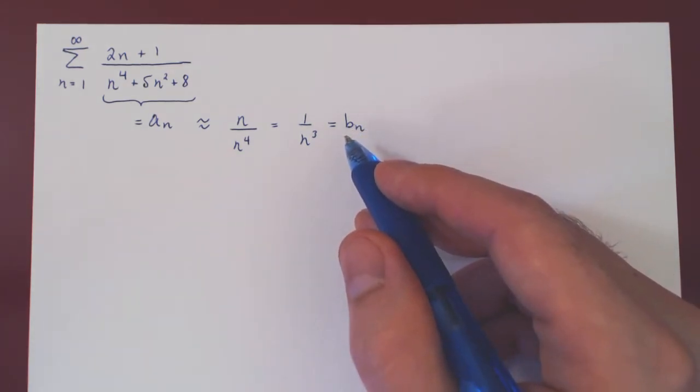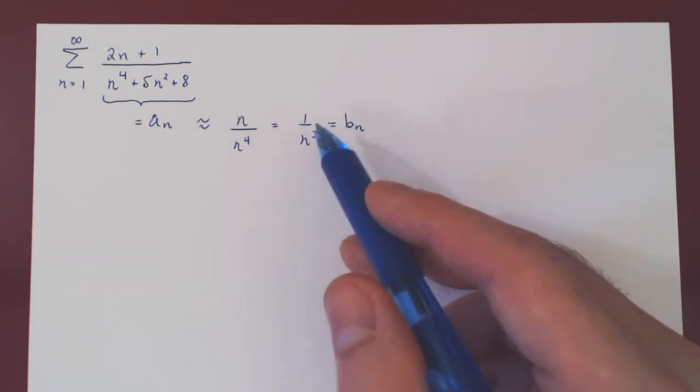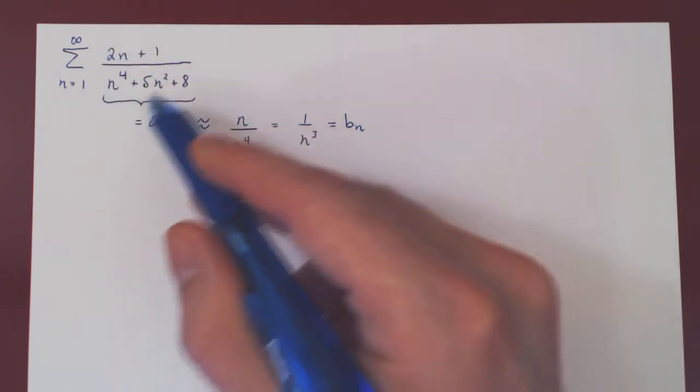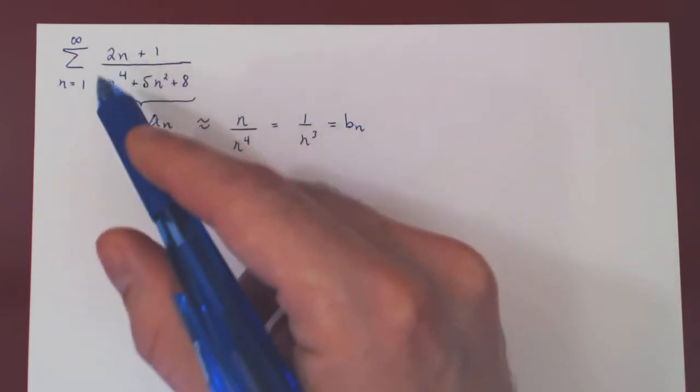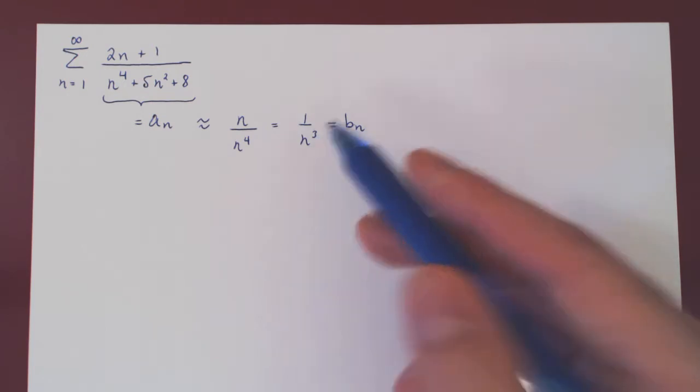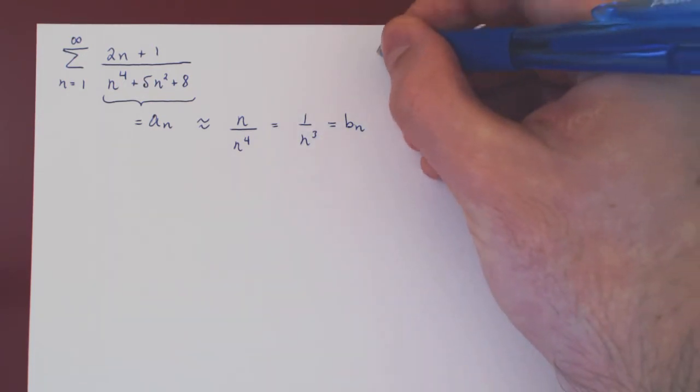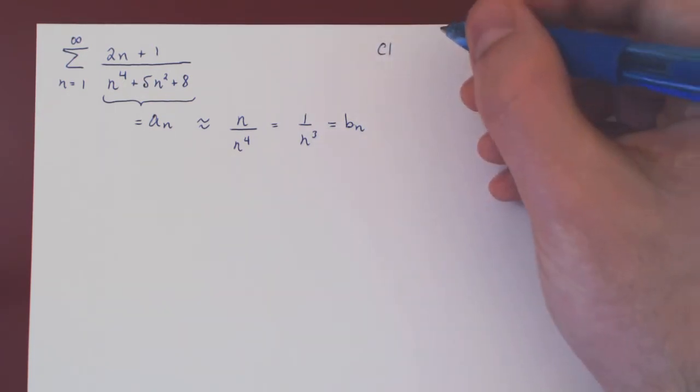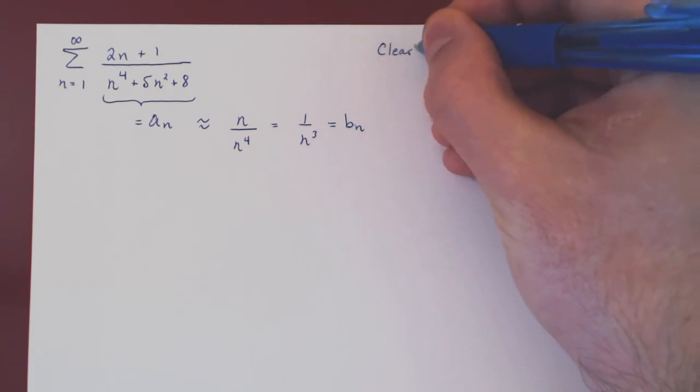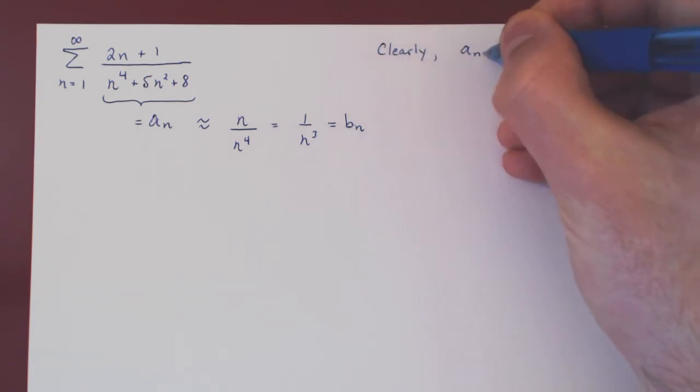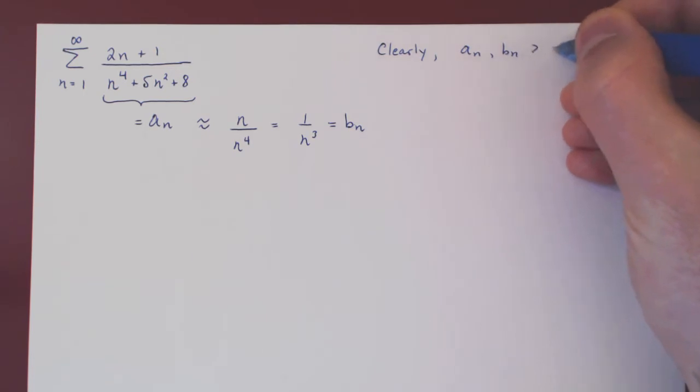Well, before we apply the limit comparison test, we have to show that the two conditions are met. The first condition is that AN and BN are both positive. Well, this is clear, right? When N is positive, this is clearly positive. This is clearly positive. So clearly, both AN and BN are positive.